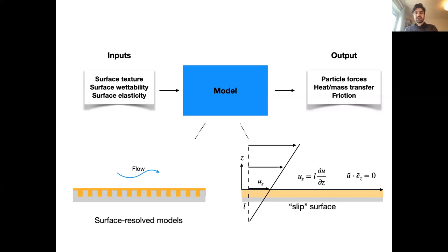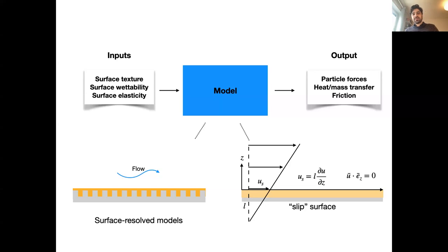With Navier's slip, you linearly extrapolate your velocity profile at the surface to zero, and that extrapolation length l is your slip length. This is a classical boundary condition you can tune to model some deviation from a perfectly smooth no-slip surface. By doing these things, we can learn about physics and see how transport coefficients are modified. An interesting part of this talk concerns how to determine the appropriate boundary conditions for a given physical surface texture.